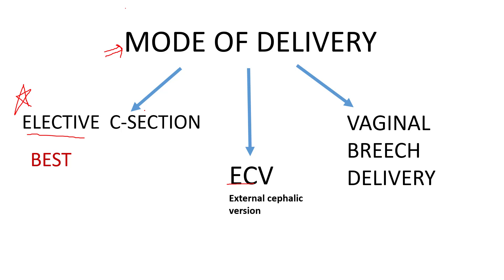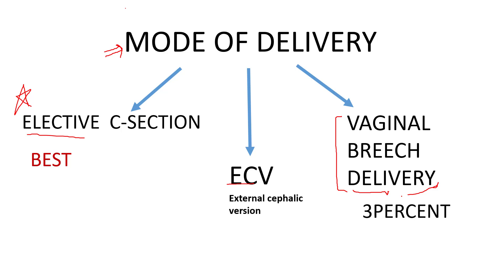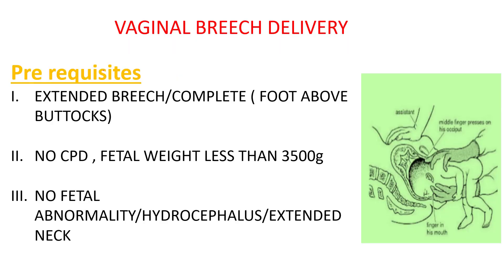Most females don't want C-section — they want vaginal birth. We will assess whether they are candidates for the other two procedures, because if they are not, we counsel the patient that we cannot do those procedures as they would threaten the life of mother and baby. Vaginal breech delivery nowadays is nearly not recommended because it is associated with a 3% increased risk of death or serious morbidity to the baby.